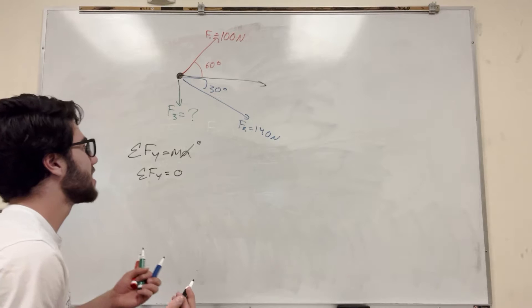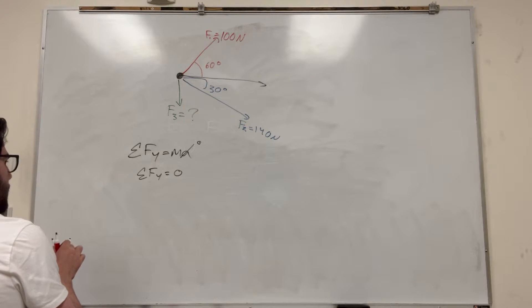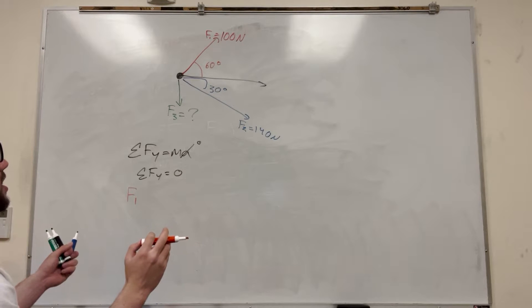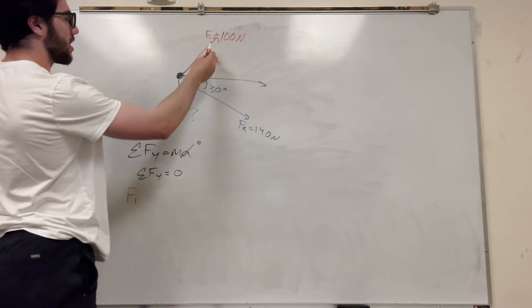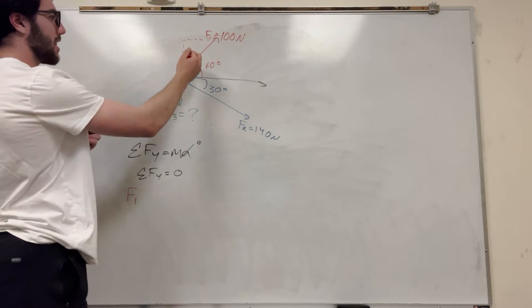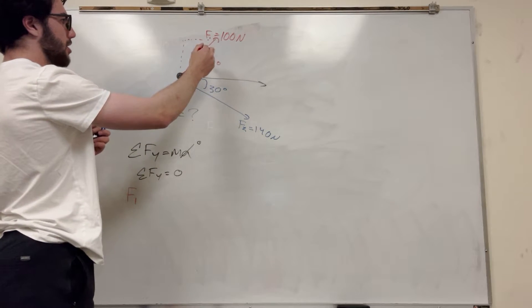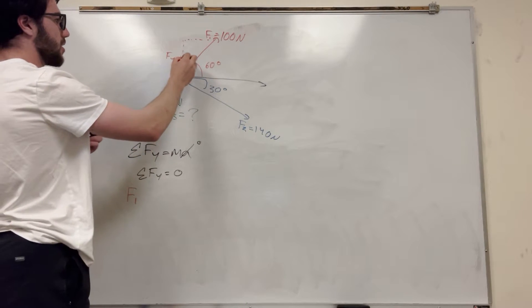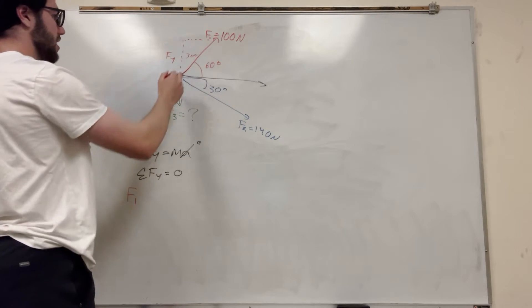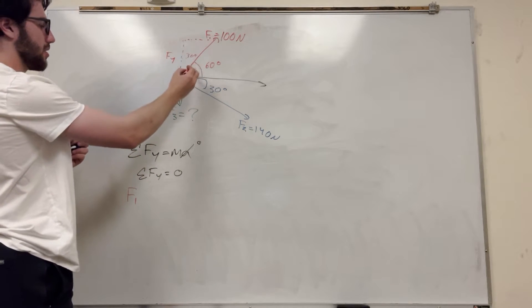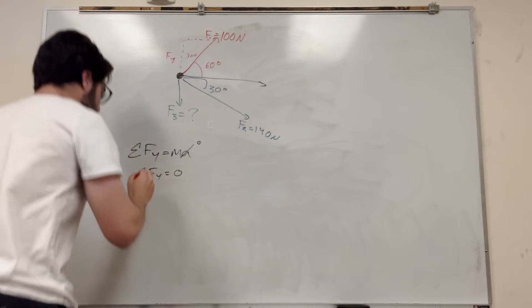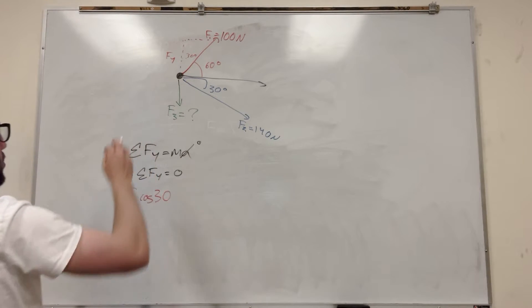So what are the forces in the Y direction? Force one isn't acting purely in the Y direction — we use a triangle decomposition. We're trying to find the Y component of force one: the hypotenuse is 100 newtons, so the Y component is the hypotenuse times cosine of the relevant angle. For the blue triangle, we're looking at cosine of 90 degrees plus 30, which is cosine of 120, because that force is acting downward and gives a negative value.